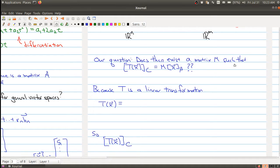Does there exist a matrix M such that we can satisfy this particular relationship? And what we have to do is take advantage of the fact that T is a linear transformation.